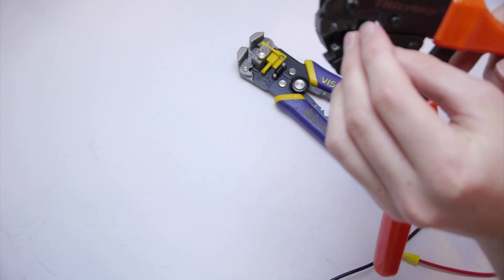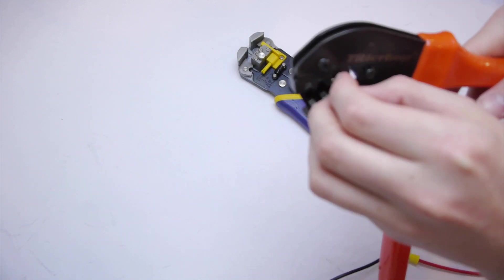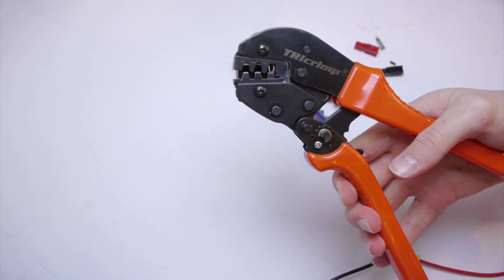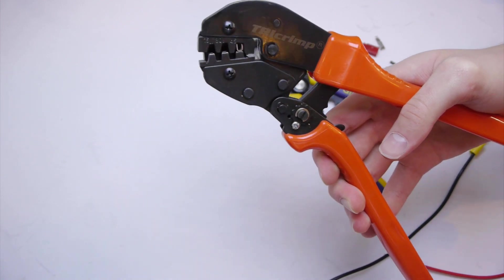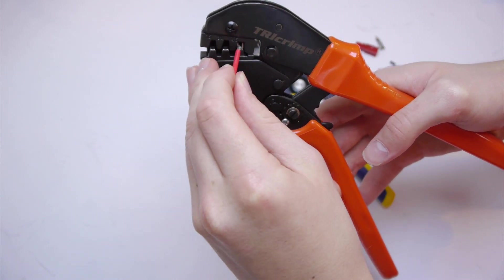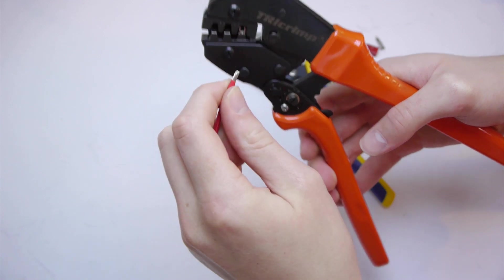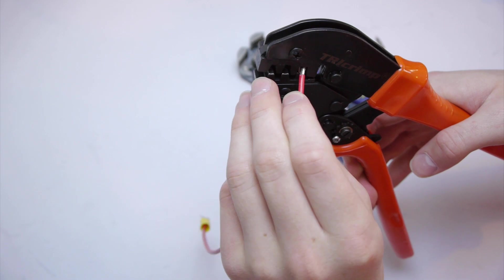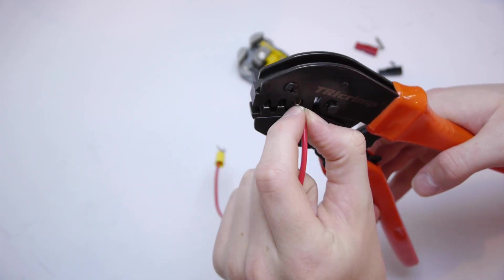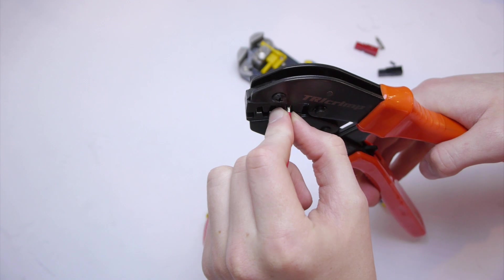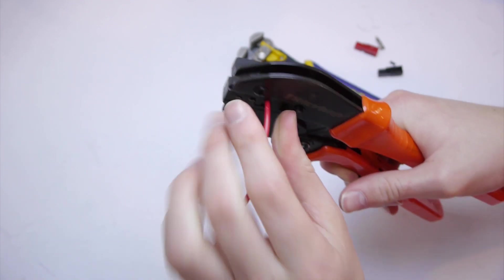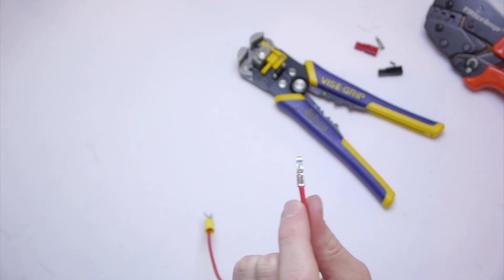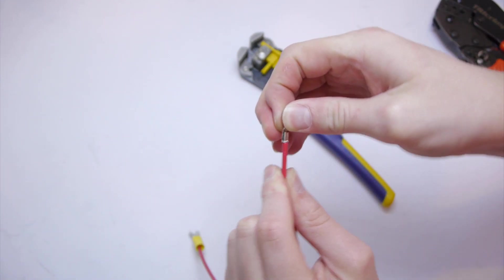To crimp your connector, all you need to do is put it inside the crimper. We'll hold it just a tiny bit to make sure it's in all the way, then put your wire in. Make sure none of the little tiny wires go outside of the crimper. And then squeeze, and you will have a very good connection.